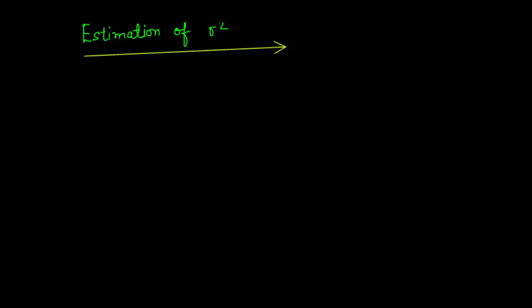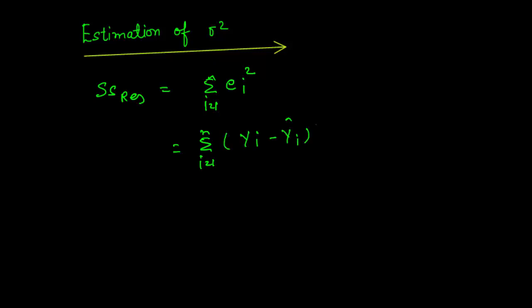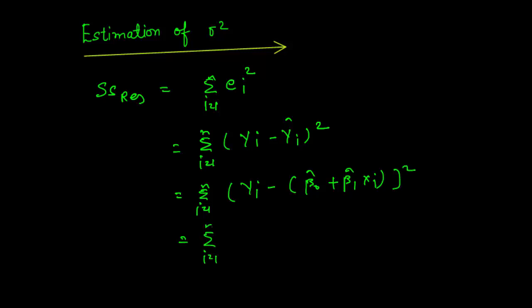In this lecture, we will talk about estimation of sigma square. As we know, SS_residual is equal to summation over ei squared, where ei is the residual of the i-th term. The value of ei is equal to Yi minus Ŷi, whole square. I am replacing Ŷi by β̂₀ plus β̂₁Xi, so it becomes Yi minus β̂₀ minus β̂₁Xi, whole square.